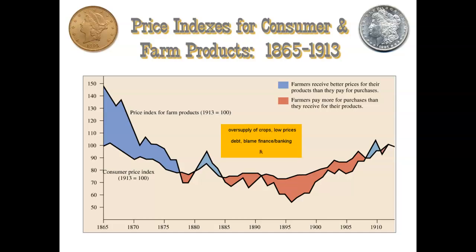Another issue that farmers have is the railroads. Looking at the red on the chart, particularly significant in 1896 — which happens to be an election year — farmers are paying more for purchases compared to what they're receiving in revenue for their actual product. That's a problem, and the debt just becomes bigger and bigger. Railroads are part of the reason why farming becomes more and more expensive. There are high costs, and farmers tend to feel that the railroads and the bankers are kind of in this together — large corporate monopolies exploiting the farmers.